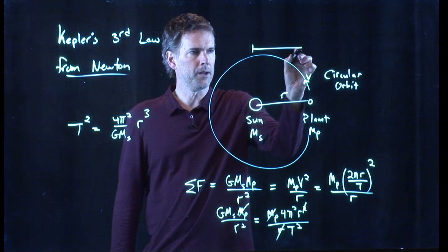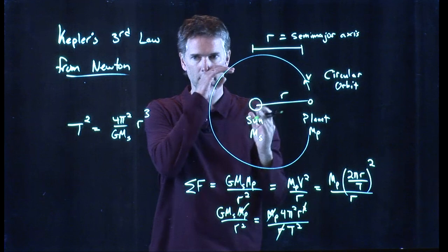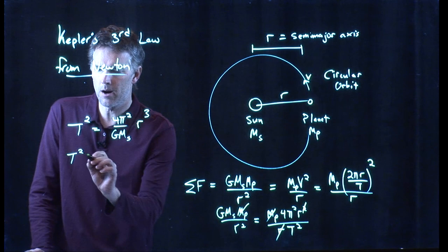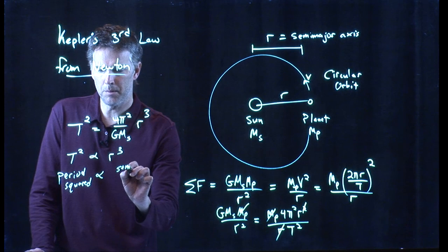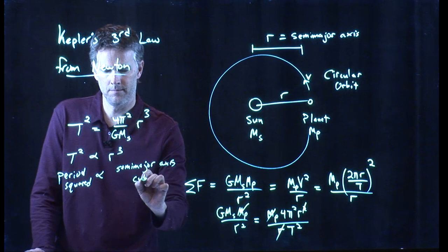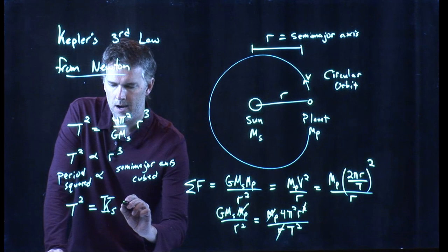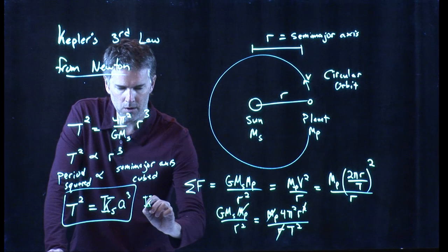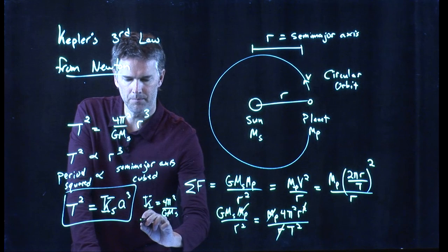But here's the deal. A circular orbit means that r is in fact the semi-major axis. The major axis would be the diameter. The radius is the semi-major axis. And so we get t squared proportional to r cubed, which is exactly what Kepler said. The period squared is proportional to the semi-major axis cubed. And in fact, we can write down the following. It's equal to k sub s times a cubed, where k sub s is called the Kepler constant. And it has a value of 4 pi squared divided by g m sub s. This is Kepler's constant.